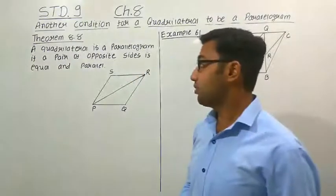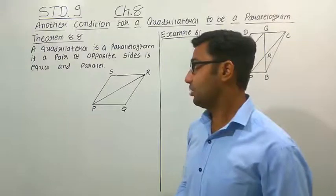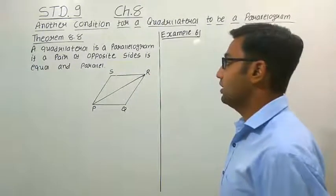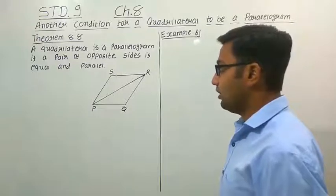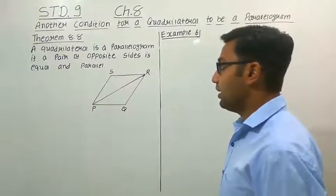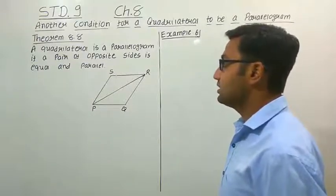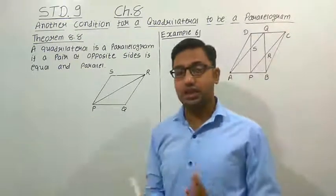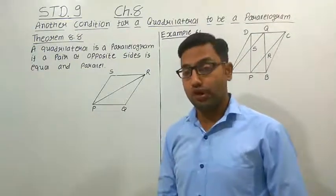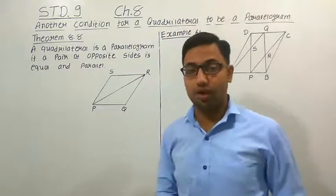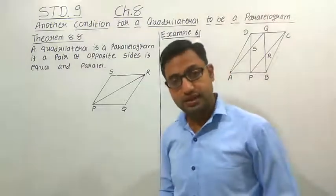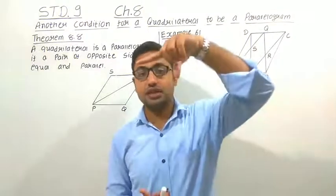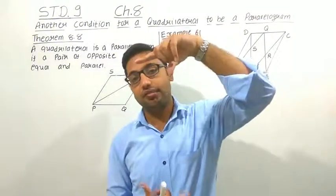This property is stated as a theorem. The statement is: a quadrilateral is a parallelogram if a pair of opposite sides is equal and parallel. This is the least requirement condition to make a quadrilateral a parallelogram — if only one pair of opposite sides is equal and parallel.